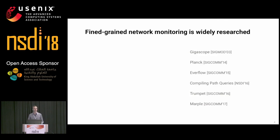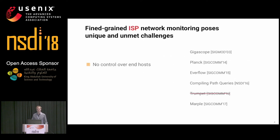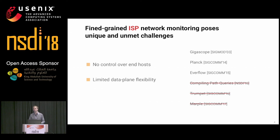There has been a lot of work to get that visibility, mostly for data centers. The key issue is that ISP networks have specific constraints. They don't control the end host, so we can't use them to probe the network or replay traces. We don't own the actual traffic, so we can't modify headers that much. We are limited by what the routers support, and the processing power of routers is fairly limited, so we can't do complex operations directly in the data plane.